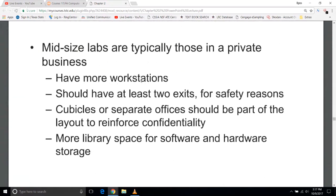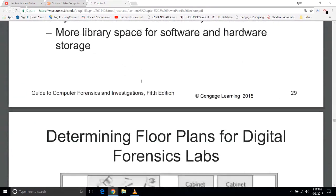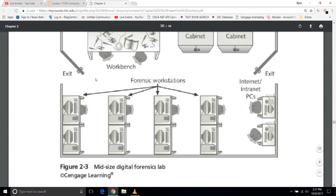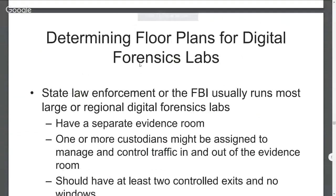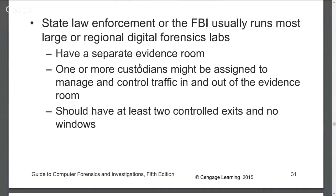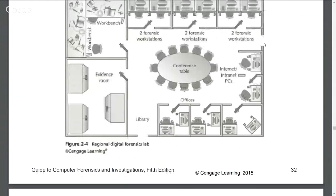Mid-sized labs are bigger and more expensive — they can contain cubicles, library space, more workstations, and two exits for safety reasons. In a mid-sized lab you'll have two internet PCs on the far right and forensics workstations with locking cabinets. State law enforcement and the FBI run most of the large and regional digital forensics labs — these have separate evidence rooms, custodians, and two controlled access points with no windows. In a large lab, the evidence room is locked, workbenches are locked, forensics workstations are locked, but the internet PC is not. There's also a big conference table and individual offices.